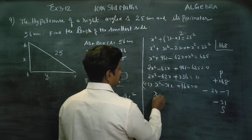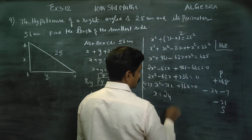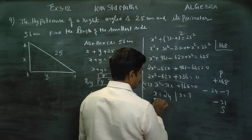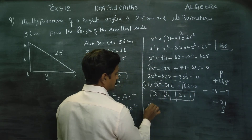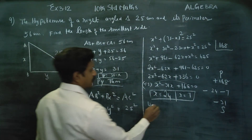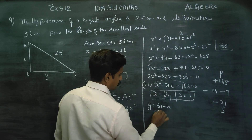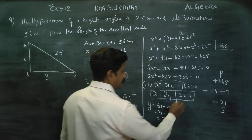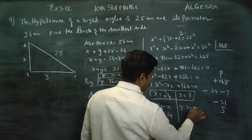The solutions are x equals 24 and x equals 7. Since y equals 31 minus x: if x equals 24, then y equals 31 minus 24 equals 7; and if x equals 7, then y equals 31 minus 7 equals 24.